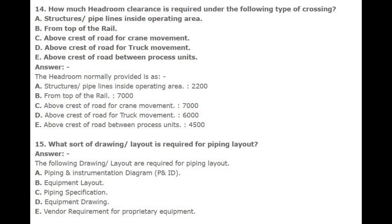Number 14: How much headroom clearance is required under the following types of crossing: a. Structure/pipelines inside operating area, b. From top of rail, c. Above crest of road for crane movement, d. Above crest of road for truck movement, e. Above crest of road between process units? Answer: The headroom normally provided is: a. Structure/pipelines inside operating area — 2200 mm, b. From top of rail — 7000 mm, c. Above crest of road for crane movement — 7000 mm, d. Above crest of road for truck movement — 6000 mm, e. Above crest of road between process units — 4500 mm.